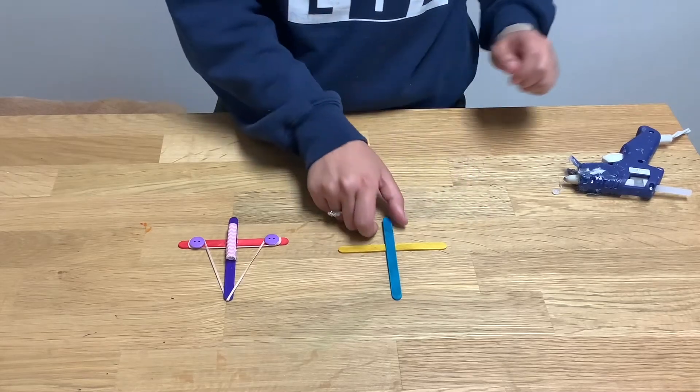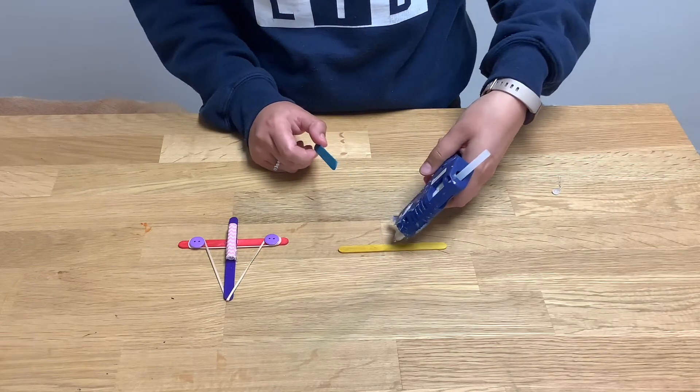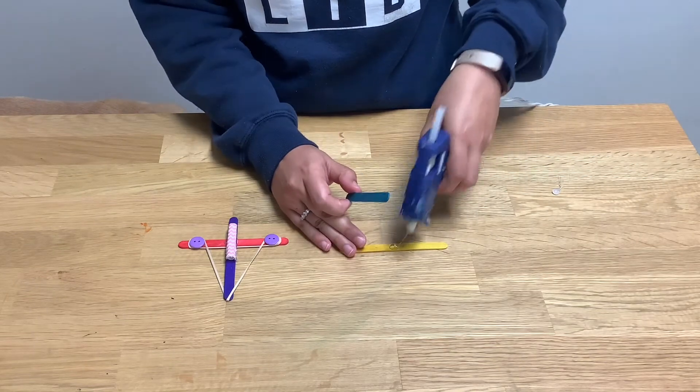So you just want to start by taking two popsicle sticks and putting them perpendicular to each other, so in this cross shape.